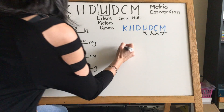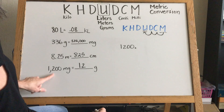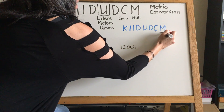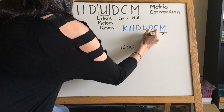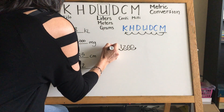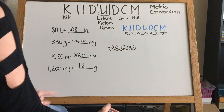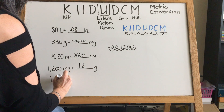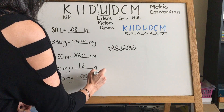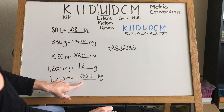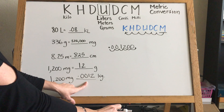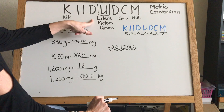Just for fun, let's convert 1200 milligrams all the way to kilograms. Starting at milli, we go six steps to the left: one, two, three, four, five, six. We have to add two zeros, so our 1200 milligrams turns into 0.0012 kilograms. That's hardly anything — that's 12 ten-thousandths of a kilogram.